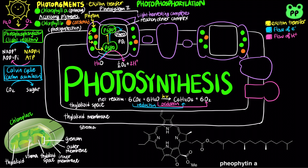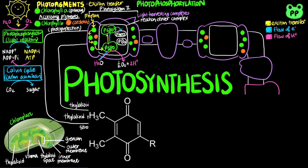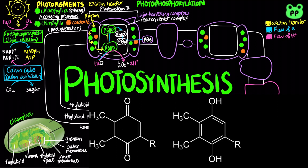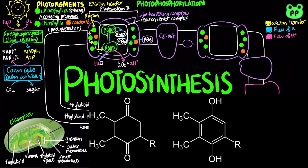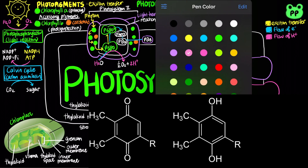Pheophytin then transfers electrons to plastoquinone A, abbreviated as PQA, which in turn passes its electron to another plastoquinone, abbreviated as PQB, reducing it to the quinol form. The reduced PQB donates electrons to cytochrome B6F, which in turn transfers electrons to plastocyanin.